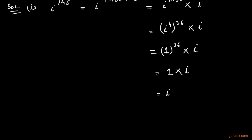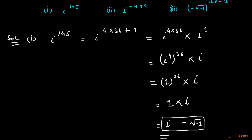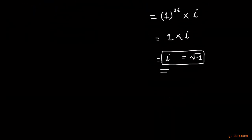So the solution of the first part is iota, or we can say under root of minus 1. This is the solution of Part 1 and now we shall move to the second part.